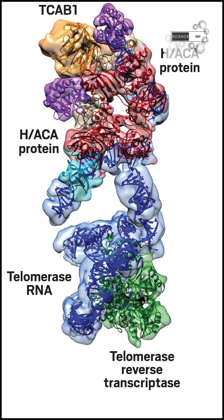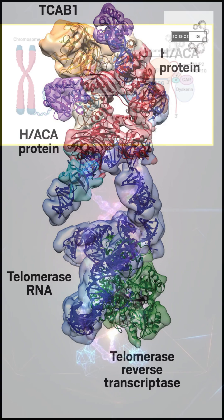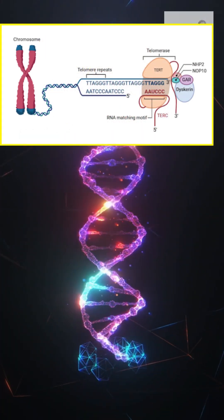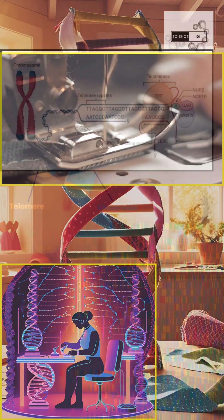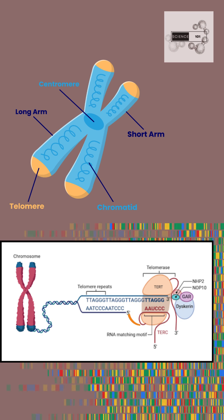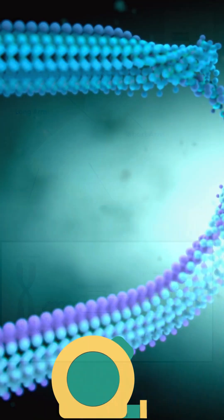Enter telomerase. This enzyme binds to the frayed ends of your DNA and starts adding protective sequences like a molecular stitcher. Using its built-in RNA template, telomerase adds new DNA bases, extending the telomere like a biological tape measure.